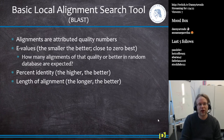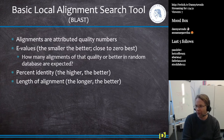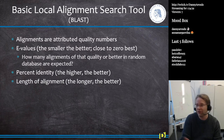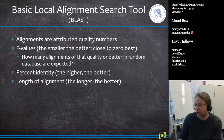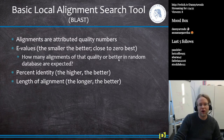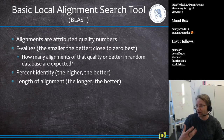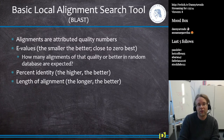When you do BLAST, every alignment gets a quality number called the E-value. The smaller the better — an E-value of zero means two sequences are identical, an E-value of 50 means they are completely different. The E-value is similar to a p-value: it tells you how many alignments of that quality or better would appear in a random database. E-values lower than 0.05 are considered homologous; E-values higher than 0.5 are not considered similar.